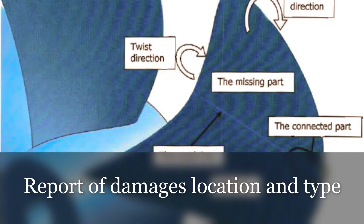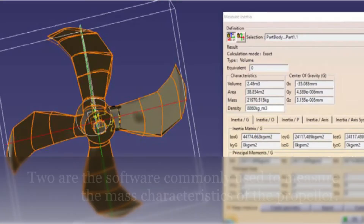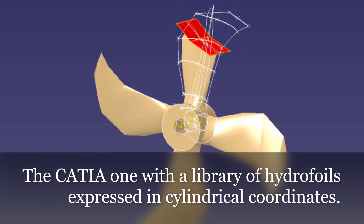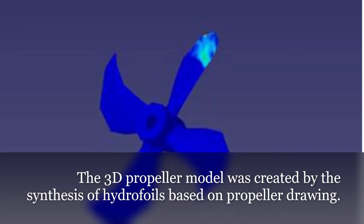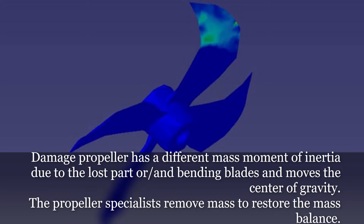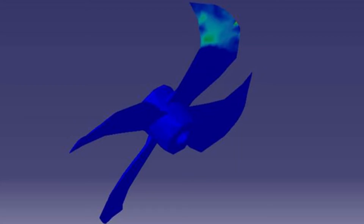A report of damage location and type is prepared. Two software tools are commonly used to measure the mass characteristics of the propeller: CATIA, with a library of hydrofoils expressed in cylindrical coordinates. The 3D propeller model is created by the synthesis of hydrofoils based on propeller drawings. A damaged propeller has a different mass moment of inertia due to lost parts, slashes, and bending blades, which moves the center of gravity. Propeller specialists remove mass to restore the mass balance.